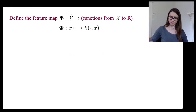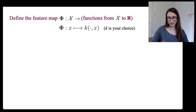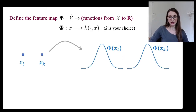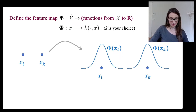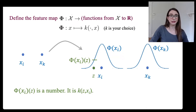Here's our feature map. It takes x and evaluates k at just one of its arguments — at x — and leaves the other one waiting for another argument. I like to think about it as mapping a point to a function that is centered at that point. When you put that second argument in, it simply evaluates the kernel at both arguments and you get a number back.